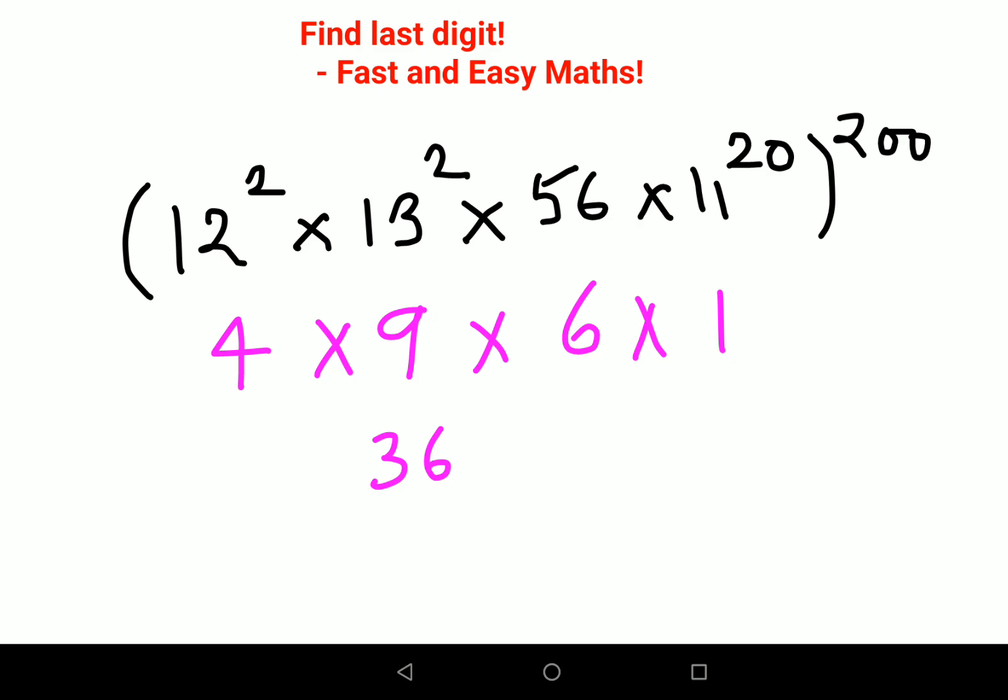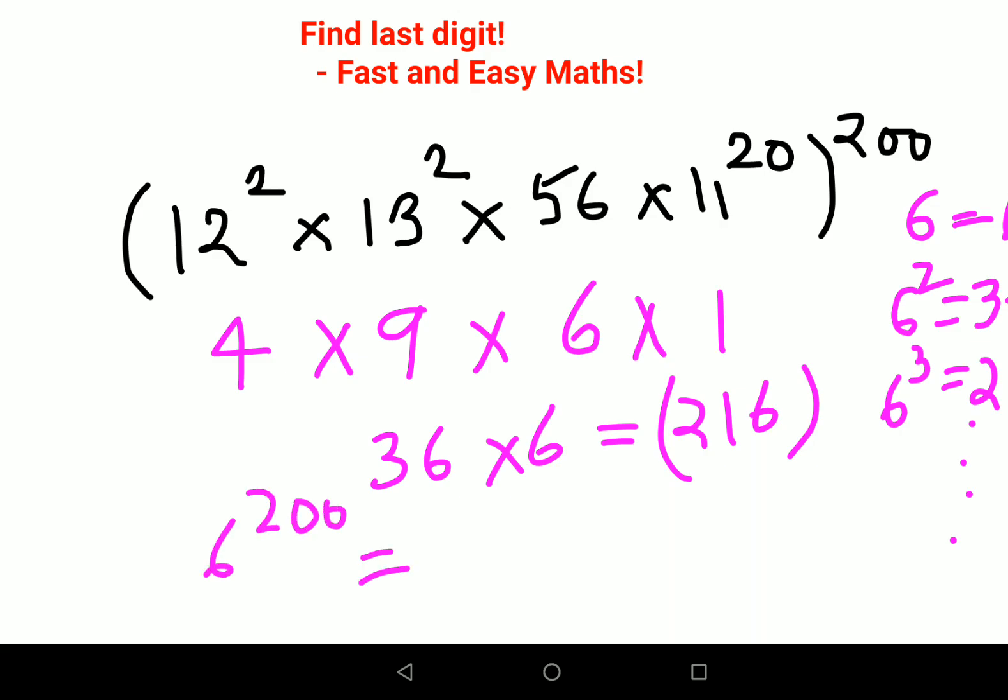Now if you look closely, 6 is again that number whose raised to any power will always get you the last digit as 6. Because 6 squared is 36, 6 cubed is 216, and so on and so forth. So again, 6 raised to 200, your answer for this one will be just 6.